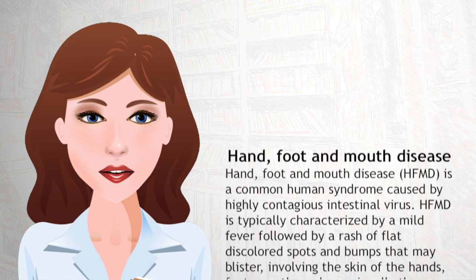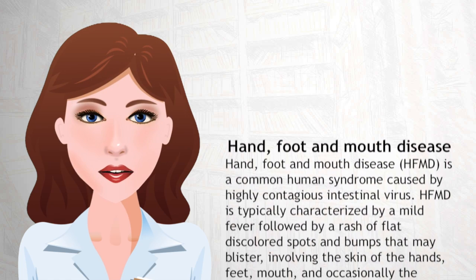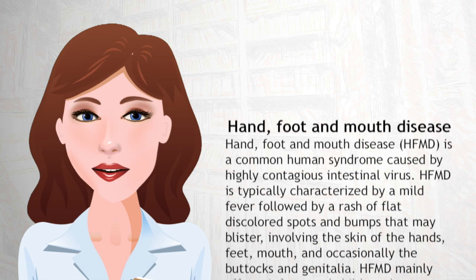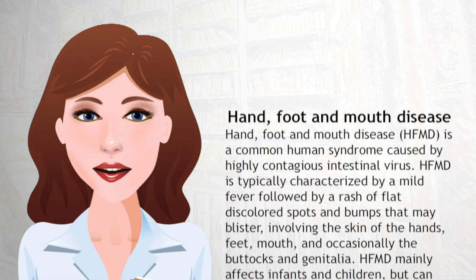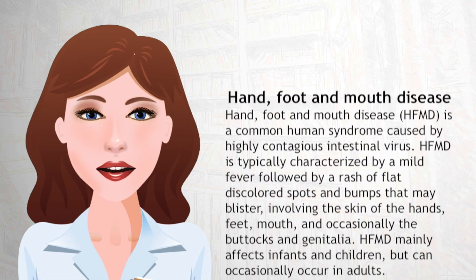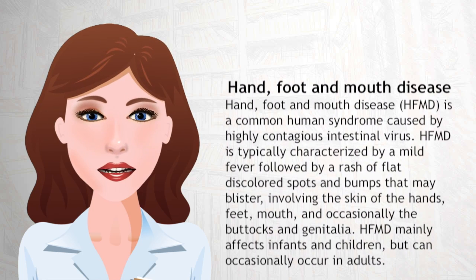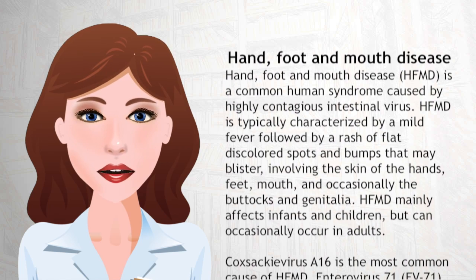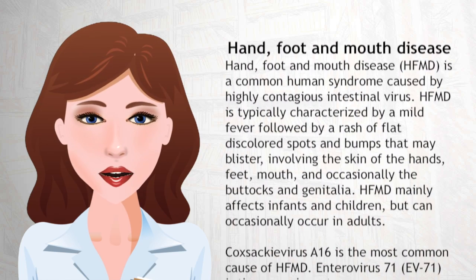HFMD is typically characterized by a mild fever followed by a rash of flat discolored spots and bumps that may blister, involving the skin of the hands, feet, mouth, and occasionally the buttocks and genitalia.